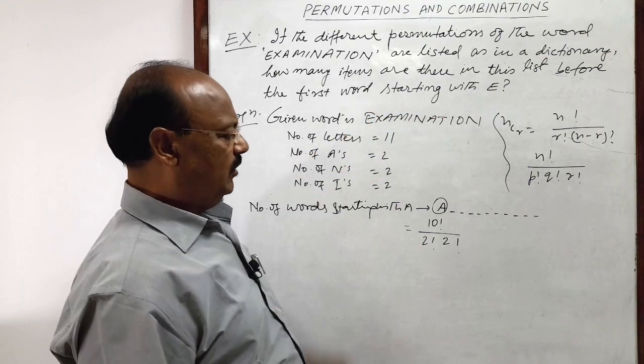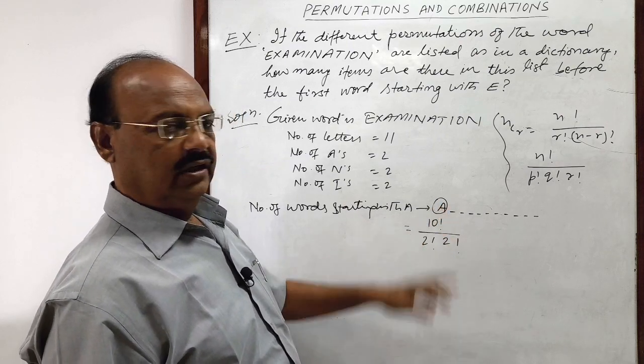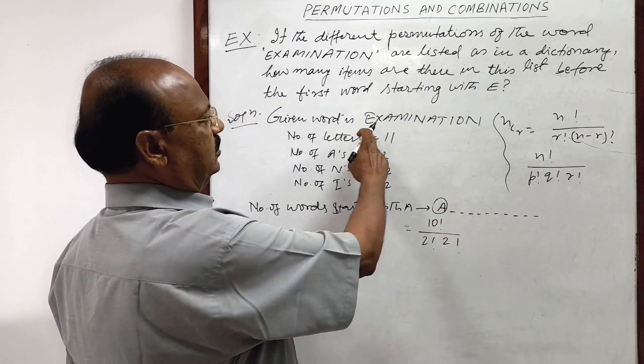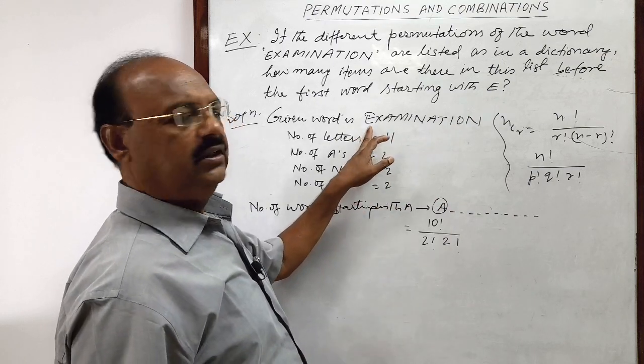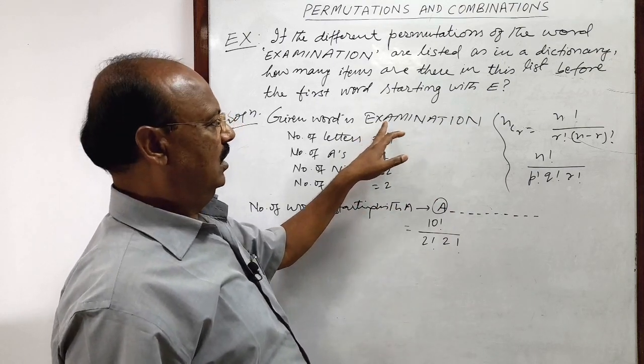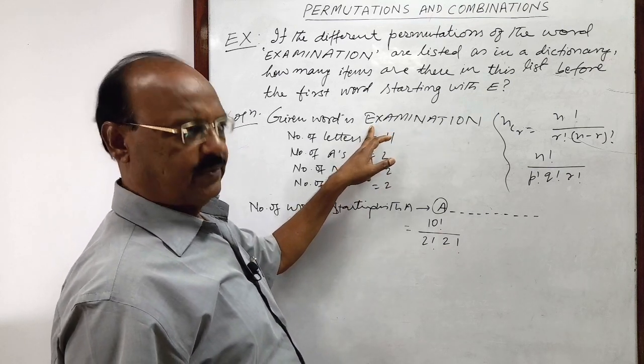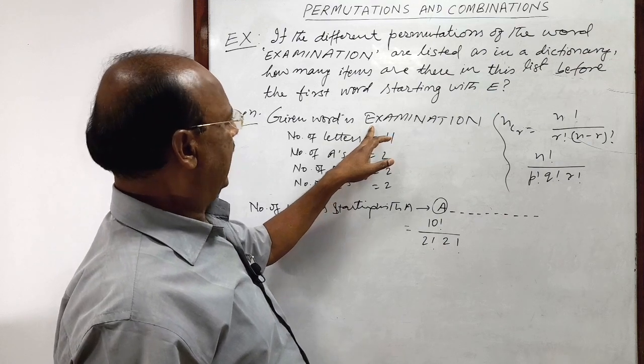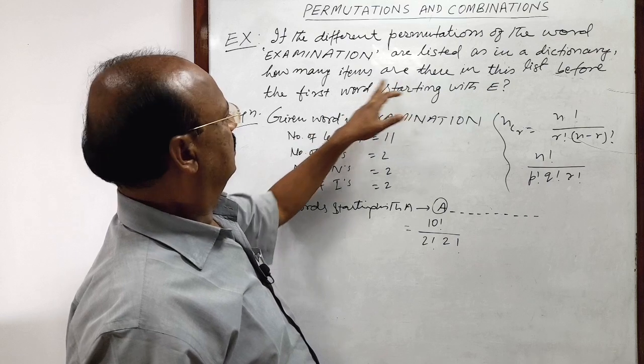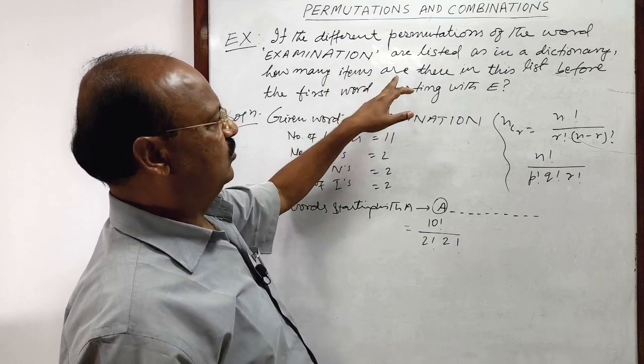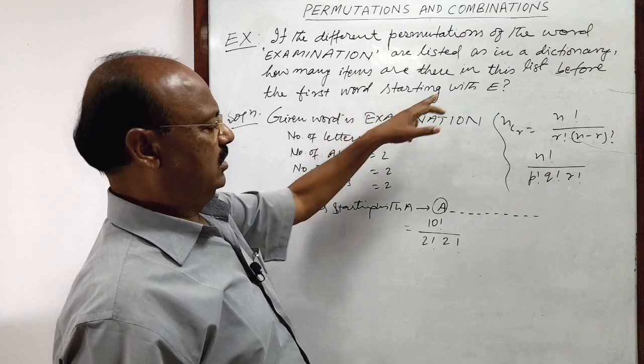Because, if all the words are listed starting with A, then according to this word examination, next letter will be E. After A, we will have a letter E here as per dictionary. So we have to count this thing only, that how many items means words are there in this list, before the first word starting with E.